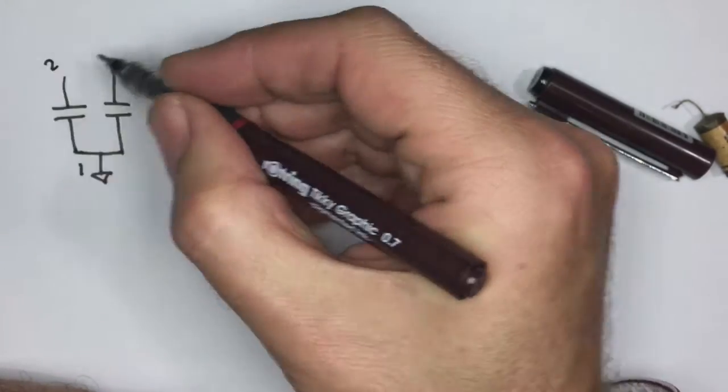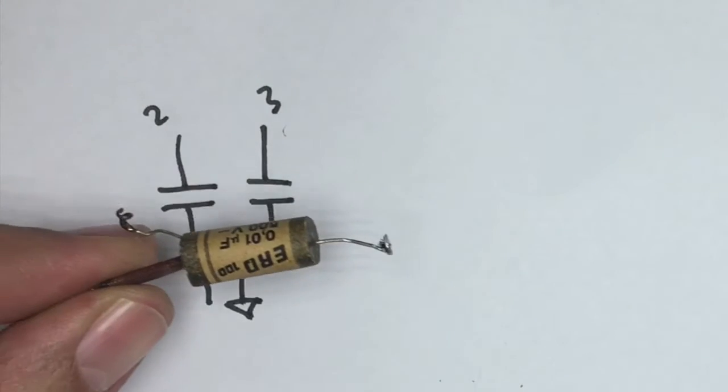So that'll be lead one, lead two, lead three. Now, that's quite normal on electrolytics, for example. And I have seen them on these as well.